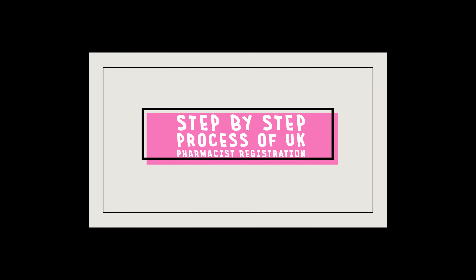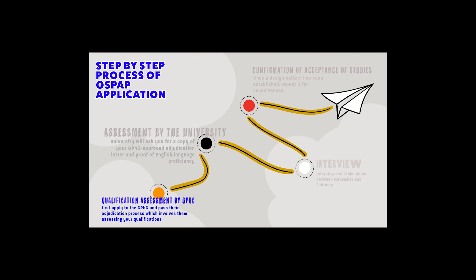The first step: if you want to apply for an OSPAP course, you must first apply to the GPhC and pass their education assessment process, which involves assessing your qualifications, work experience, fitness to practice, and English language competency. You will need to pay a fee of £739 — around 74,000 Indian rupees — which covers the cost of processing your application.